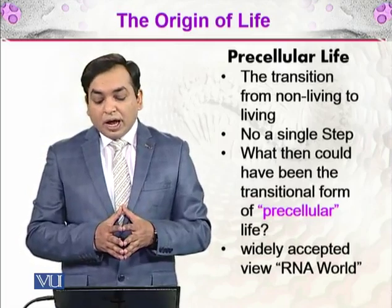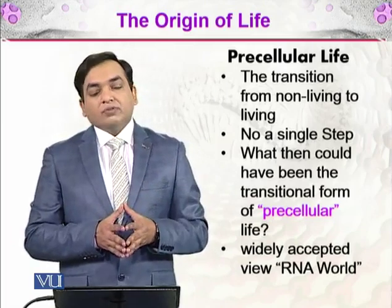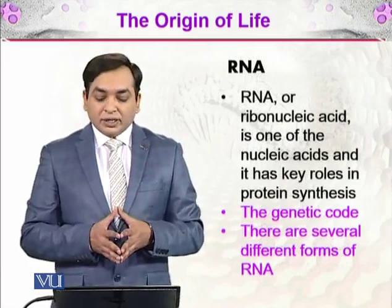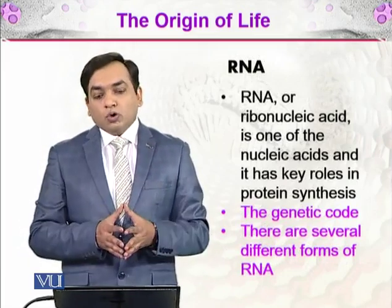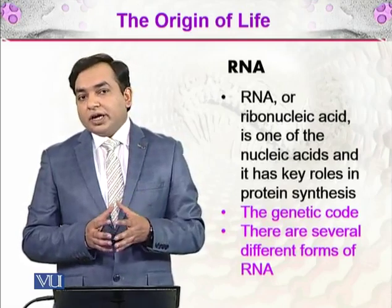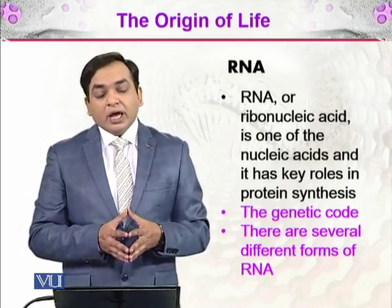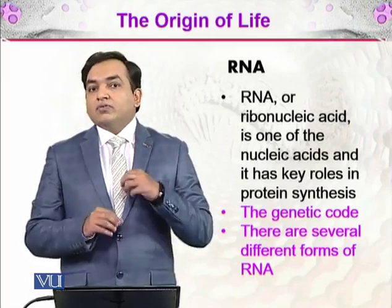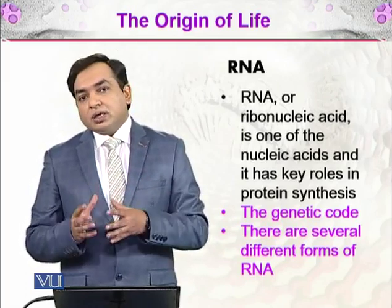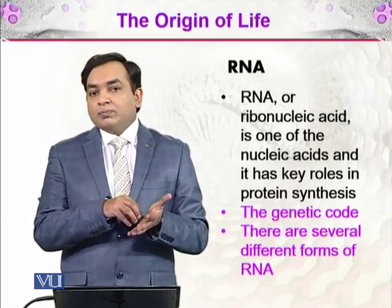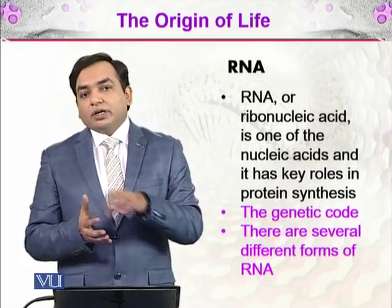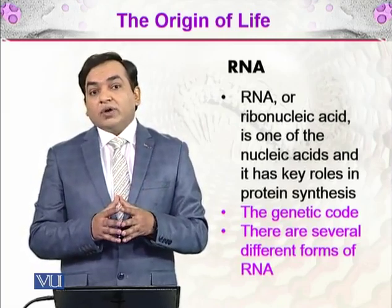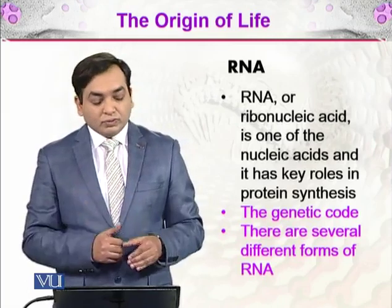That is the question of today. The idea that is widely accepted is the view of the RNA world. RNA — ribonucleic acid — is one of the nucleic acids and it has a key role in protein synthesis. RNA is present in our own cells as well. It has many types and different forms: some forms make up the ribosomes, some carry the genetic code which codes for proteins, and others transfer amino acids to the ribosomes where they are arranged into a protein. RNA has very diverse forms and is a very important molecule with many other properties.